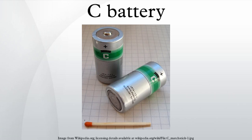A C-battery measures 50 mm in length and 26.2 mm in diameter. The voltage and capacity of a C-size battery depends on the battery chemistry and discharge conditions. The nominal voltage is 1.5 V. Alkaline C-batteries can hold up to 8,000 mAh, rechargeable NiMH C-batteries can hold up to 6,000 mAh, and zinc-carbon C-batteries usually hold up to 3,800 mAh.